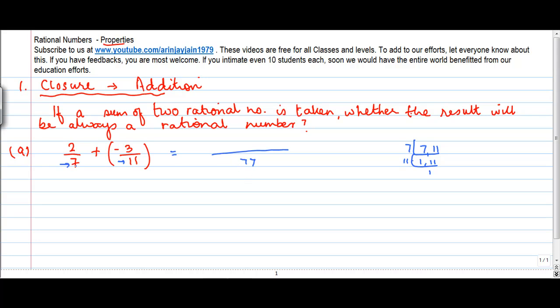How many times does 7 go into 11? 11 times. So I get 11 into 2 plus, 11 goes into 77, 7 times, 7 into minus 3. Or I get 22 minus 21 divided by 77 is equal to 1 by 77. Now this number that I have got is also a rational number, so I get a yes here.